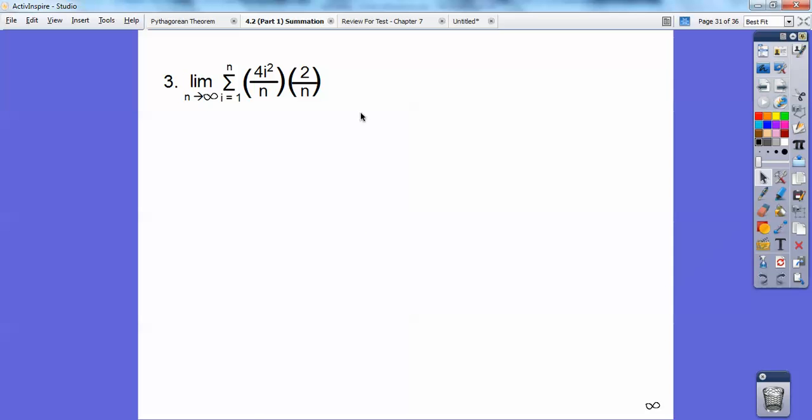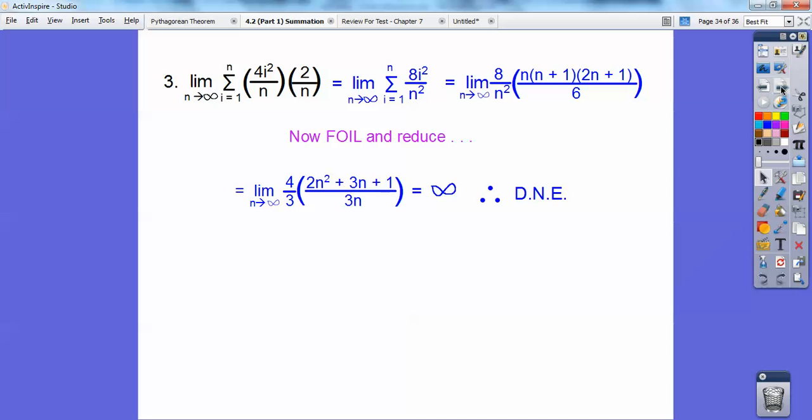This guy right here. The limit as n approaches infinity, the summation of i equal 1 to n, 4i squared over n times 2 over n. Let's go ahead and multiply those together right there. And you get 8i squared over n squared. I'm going to pull the 8 over n squared out and pull it out to the left right there. And then go ahead and foil it all out and reduce. So I just foiled all that stuff out right there and reduced.